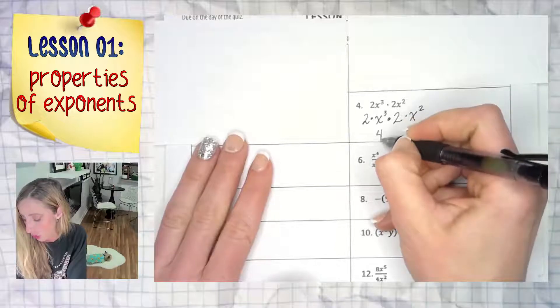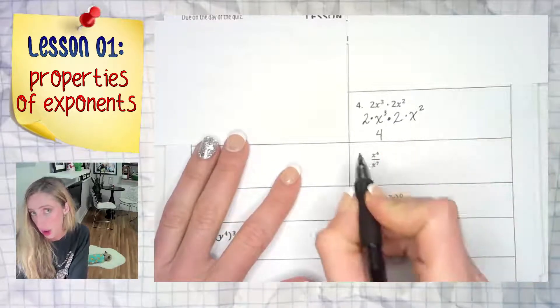So 2 times 2 is 4. X to the third and x to the second, you are multiplying.